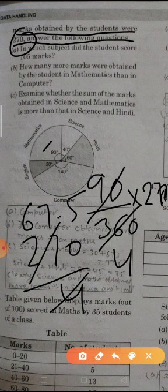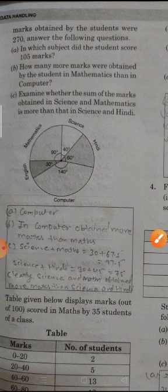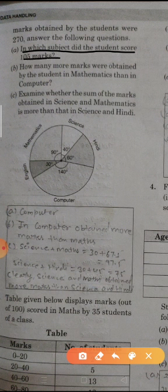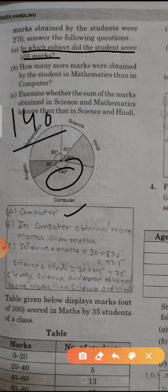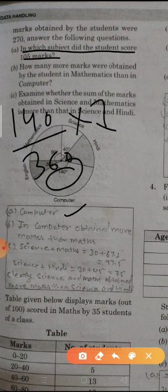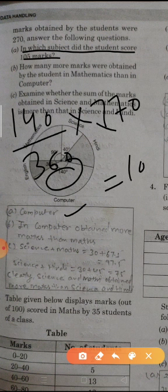So students, as this method we have to find all marks. Now, in which subject did the student score 105 marks? First is Computer. Now we solve the Computer: 140 upon 360 multiply 270. You got 105.